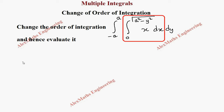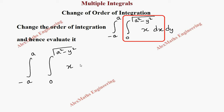Let's rewrite the question: integral minus a to a, and another integral from 0 to root of a squared minus y squared, then x dx dy. The given limits with respect to x are: x equals 0 and x equals root of a squared minus y squared.